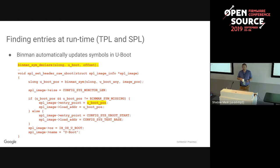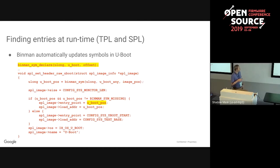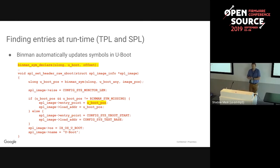Instead for SPL/TPL, you just declare a symbol using a macro. This gives you the position of U-Boot - Binman automatically stuffs this symbol into the right place in SPL or TPL. Then you can just use it directly. That kind of integration is really convenient when you haven't got a lot of space.